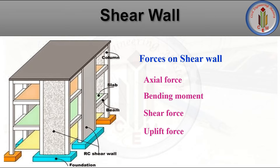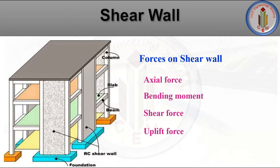Uplift forces are produced when loads are acting at the top of the building. These forces tend to lift one end of the wall and push down the other end. Shear walls must resist these uplift forces, and in some cases we need to provide hold-down devices. The effect of uplift forces is greater on short walls and lesser on taller walls.